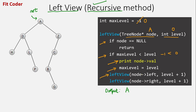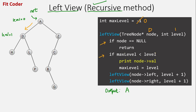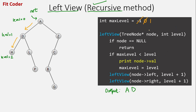Then we call left_view with the left of A and level plus 1, so we go to D. At A the level is 0 and at D the level is 1. Node is D, level is 1. We check if it is null, then compare max_level with level: max_level is 0 and level is 1, so this is true. We print D and set max_level to 1. Then we call left_view with the left of D, which is H, at level 2. Node is H, level is 2. We compare: 1 is less than 2, so we come inside and print H, then set max_level to 2.